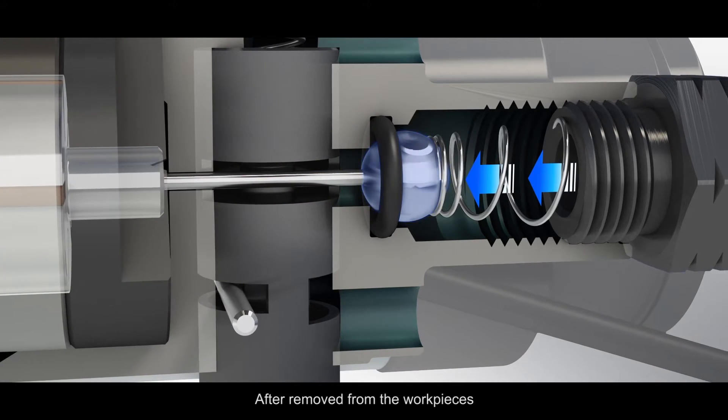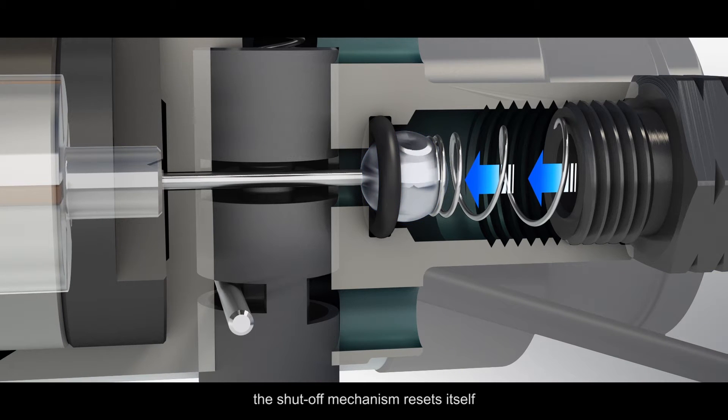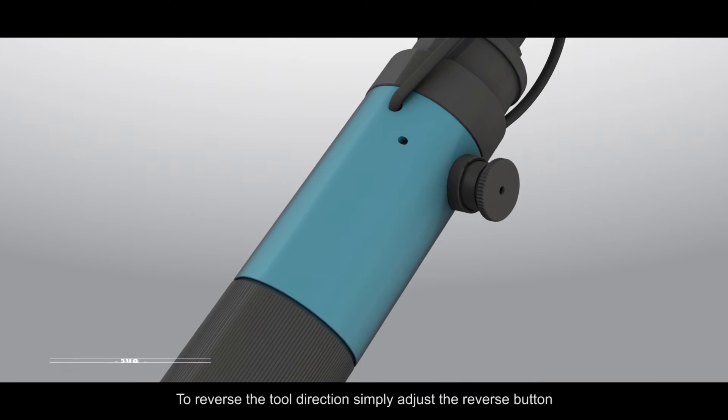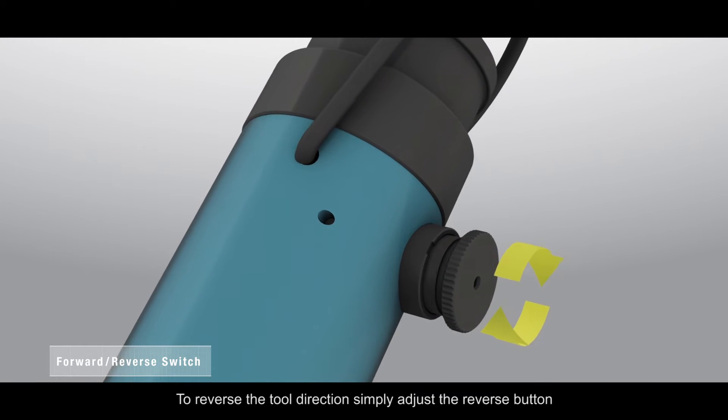After removing the work pieces, the shutoff mechanism resets itself. To reverse the tool direction, simply adjust the reverse button.